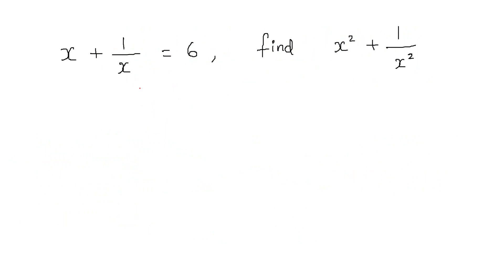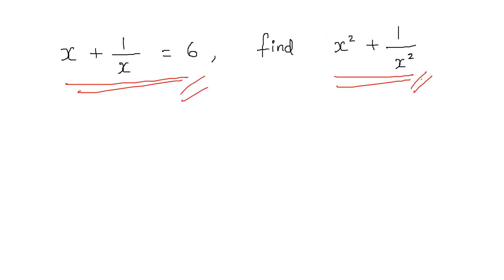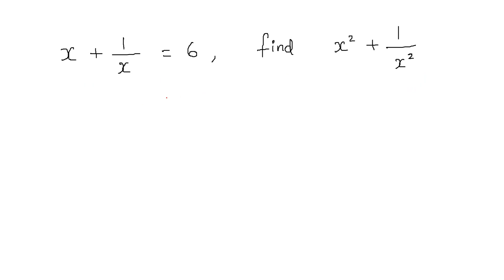First question: x plus 1 by x is equal to 6. Find x squared plus 1 by x squared. This is a very simple, easy question. Let's look at the formula. If x plus 1 by x equals k, we square both sides.